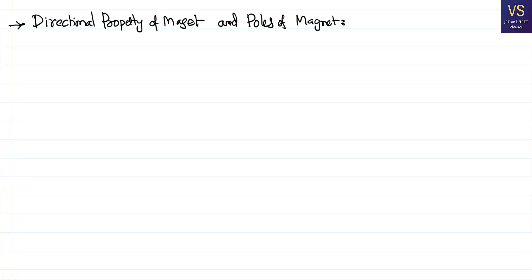In this video, we would like to talk about the directional property of a magnet, particularly a bar magnet to make it more convenient to explain. It is understood that a magnet exhibits a property of direction — that means when it is suspended, it always shows north and south on the earth.